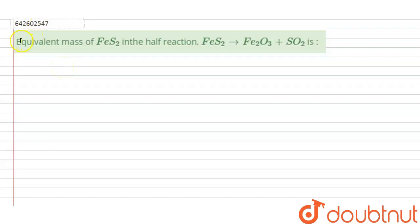For this question, the question is: what is the equivalent mass of FeS₂ in the half reaction? So in this reaction, we have to calculate the equivalent mass of FeS₂. First of all, what is equivalent mass?